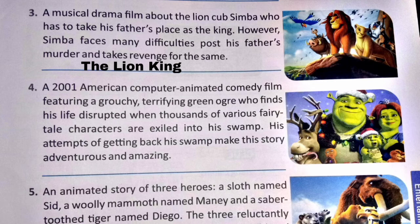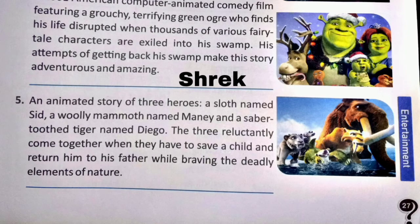The answer is Shrek. Number 5: an animated story of three heroes — a sloth named Sid, a woolly mammoth named Manny, and a saber-tooth tiger named Diego. The three reluctantly come together when they have to save a child and return him to his father while braving the deadly elements of nature.